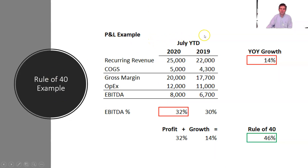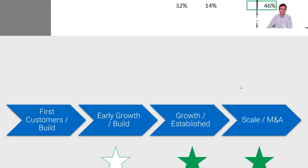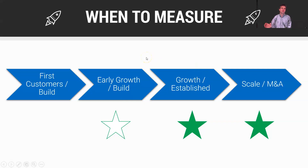Let's take a look at a simple example. We have our July year-to-date P&L, 2020 versus 2019. For year-over-year revenue growth, I'm using recurring revenue growth from July YTD 2020 over July YTD 2019 — in this case it equates to 14%. For our EBITDA margin, we're using the current year EBITDA margin, which equates to 32%. So we're adding 32% plus 14% to get 46%, which is our Rule of 40 number.